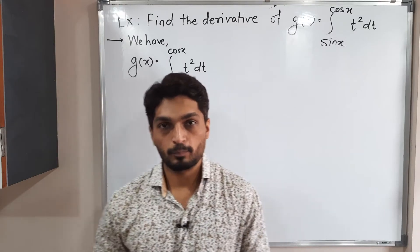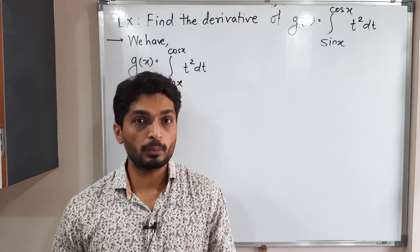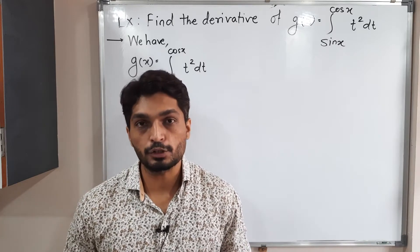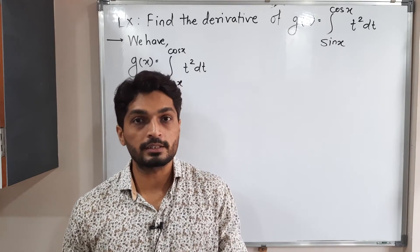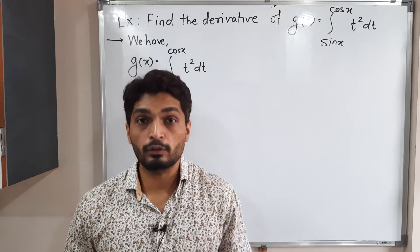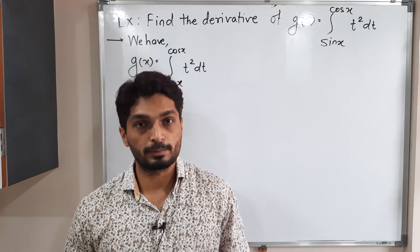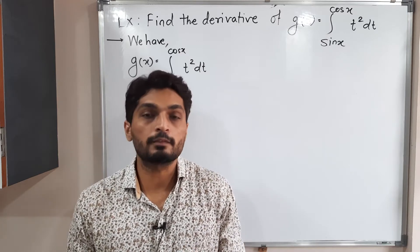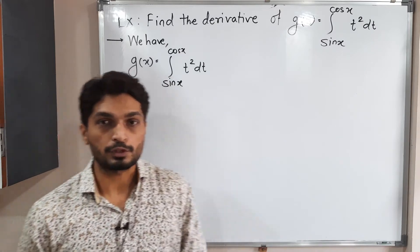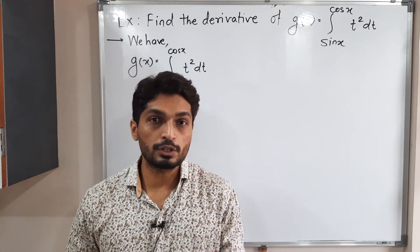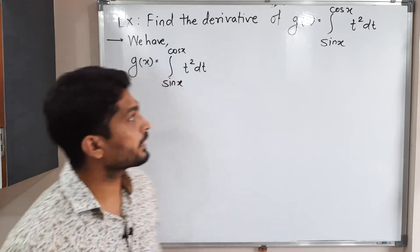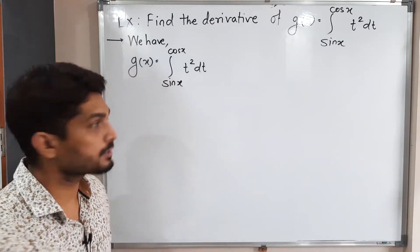Let us discuss this example. We have a function g of x which is expressed with the help of integration and we have to find its derivative. We are going to use the First Fundamental Theorem of Calculus to solve this problem. We focus on the integrand — here we take the integration of t squared, so the function is t squared.